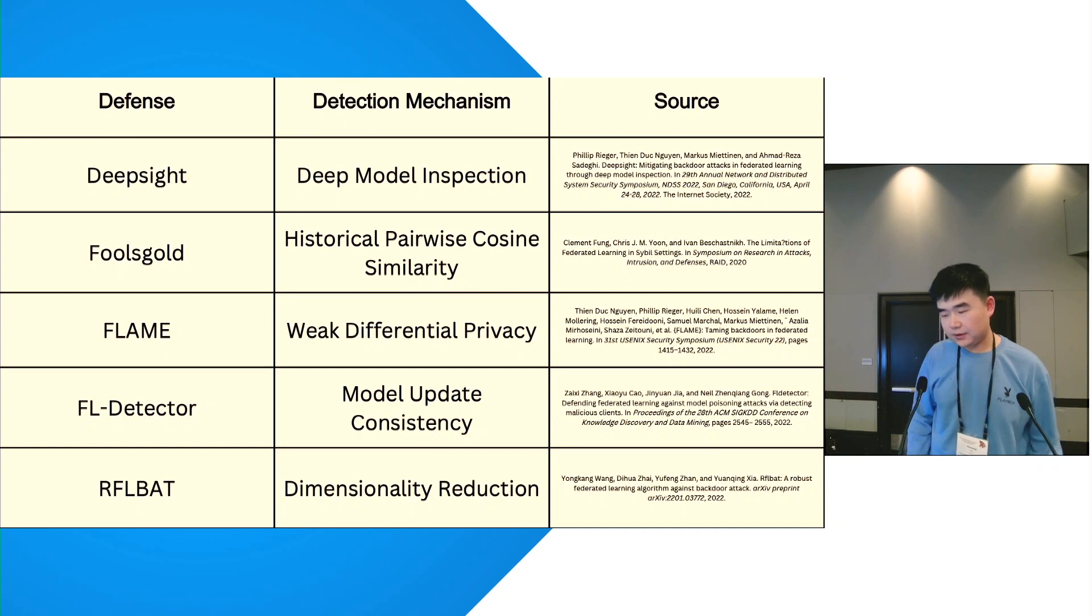FoolGold is based on historical pairwise cosine similarities and it's published on RAID 2020. FLAME is a weak differential privacy-based approach which uses HDB scan, norm clipping, and adding noise to mitigate the effect of backdoor attack, a USENIX paper last year.